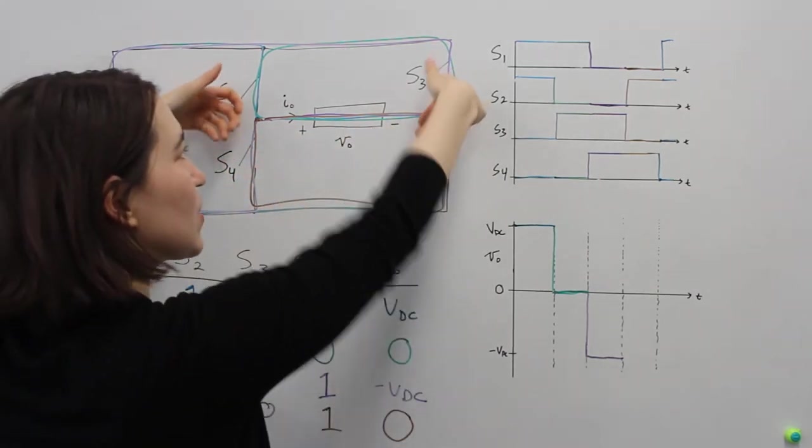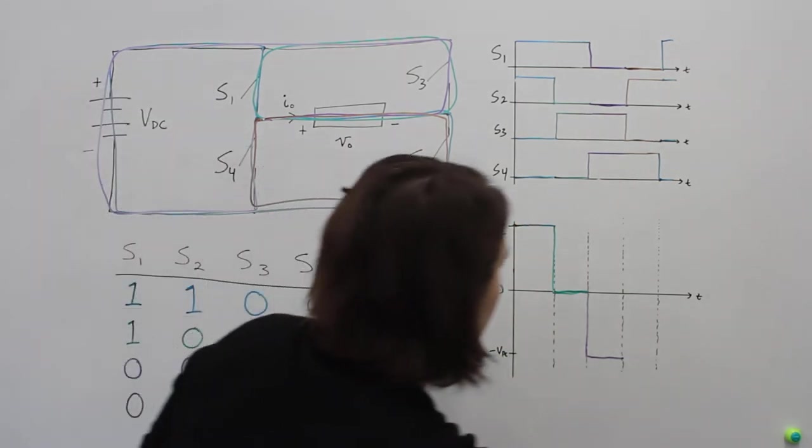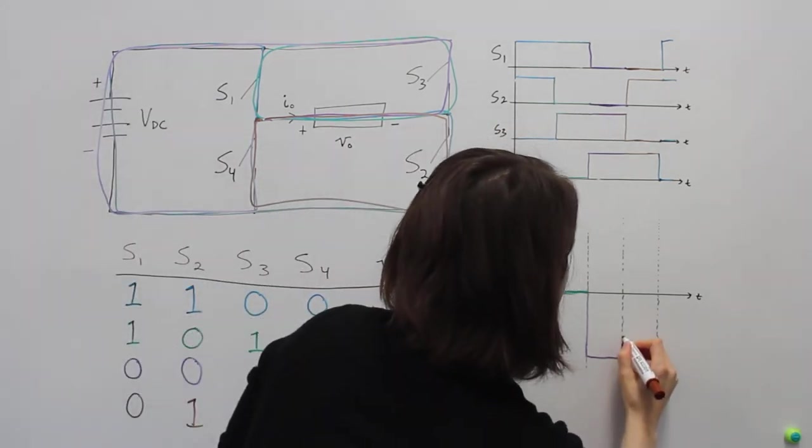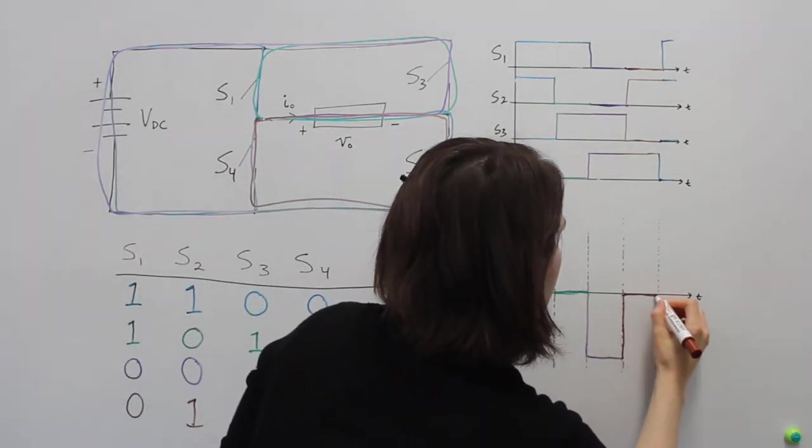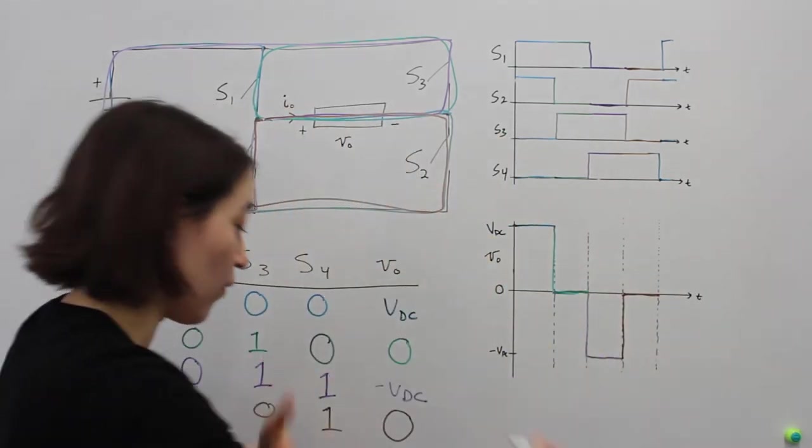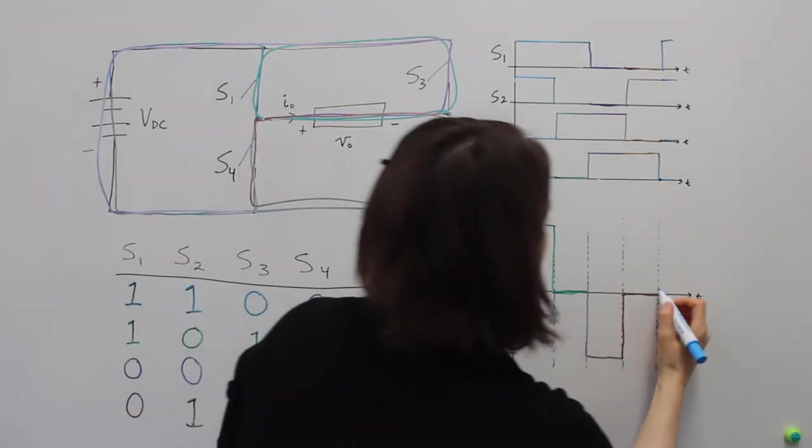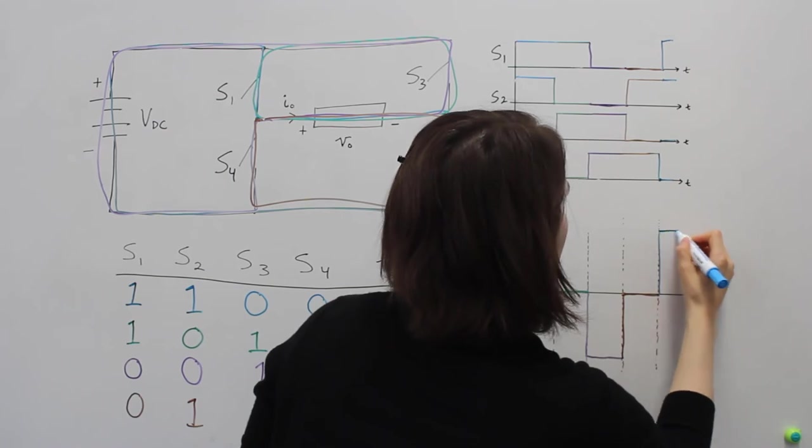But notice actually we switched which switches we used. So now we are going to go back to 0 here. And then we would start the cycle over again. And we would go back to our VDC.